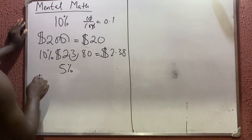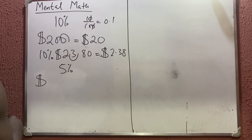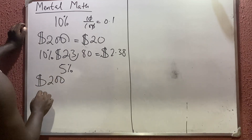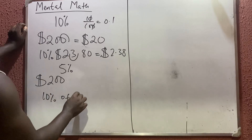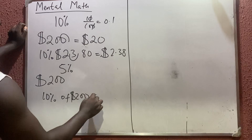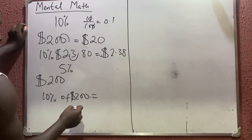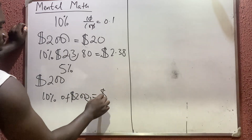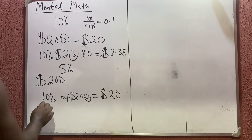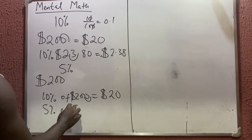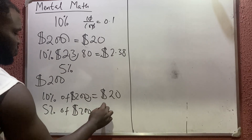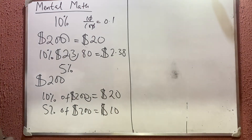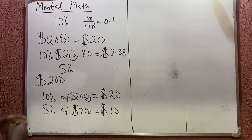So if you want to get 5 percent of 200 dollars, first you calculate the 10 percent. 10 percent of 200 dollars — put your decimal point at the edge and move once to the left — which is 20 dollars. So 5 percent simply means divide that 10 percent answer by two. So 5 percent of 200 dollars is 10 dollars.